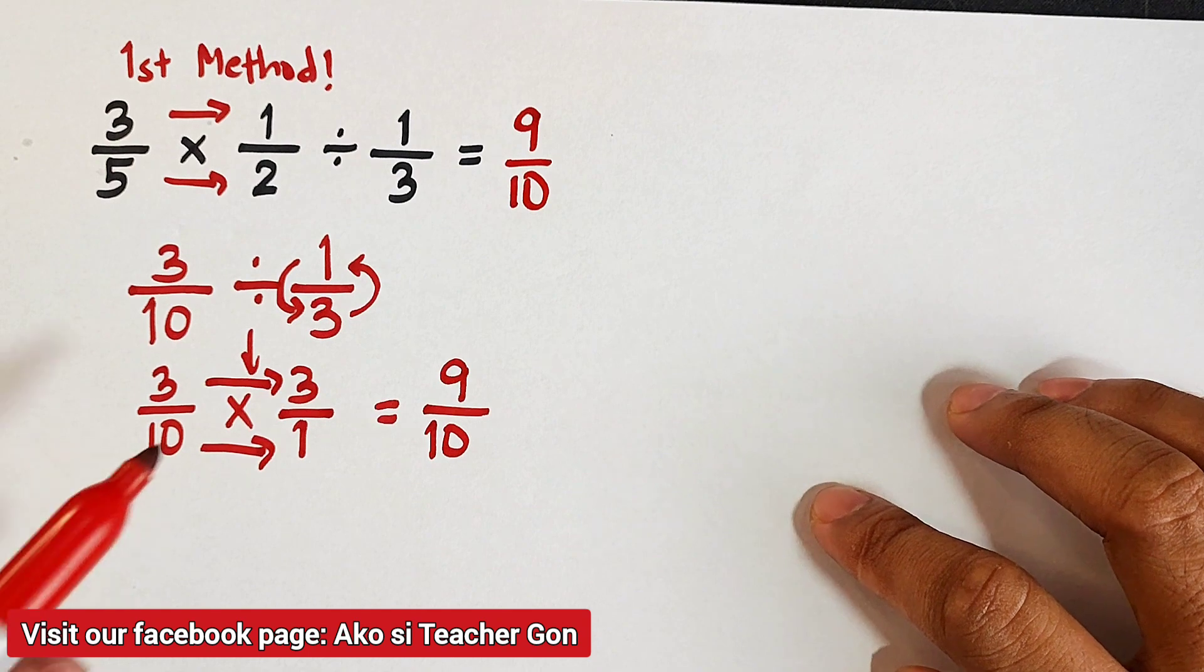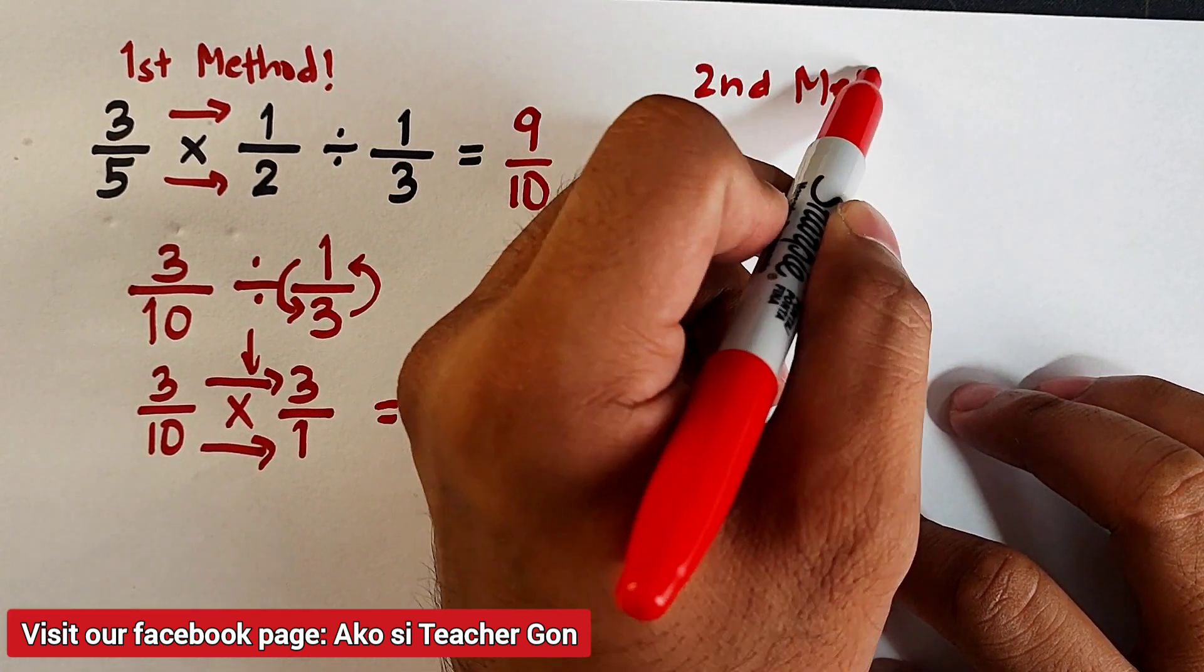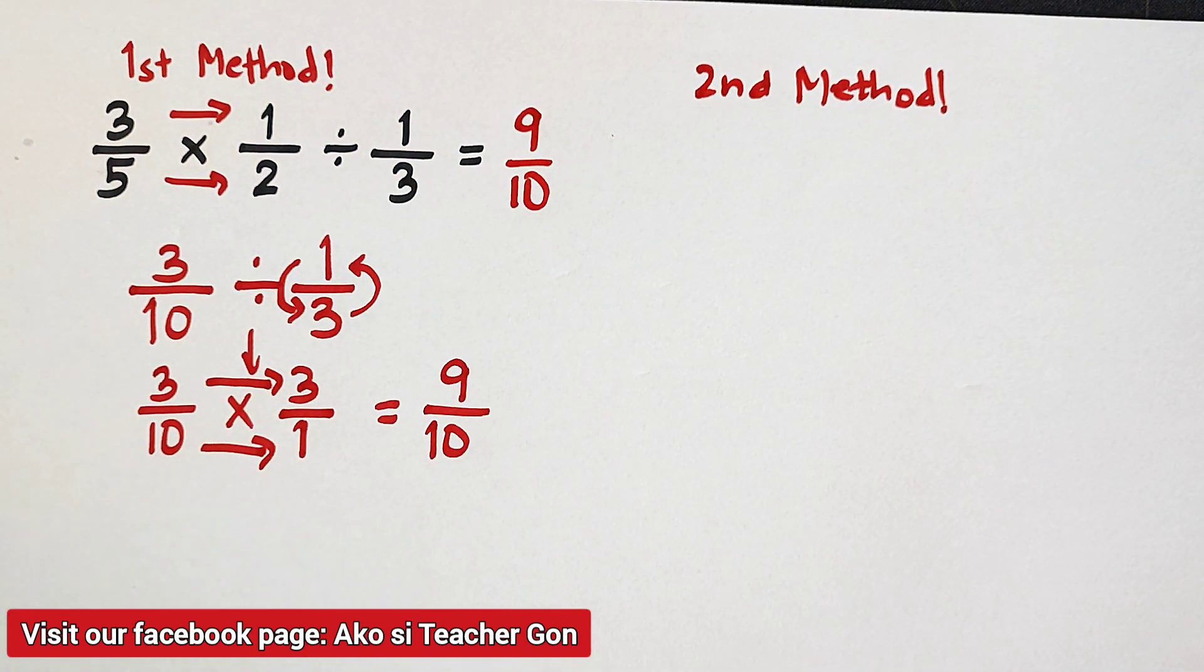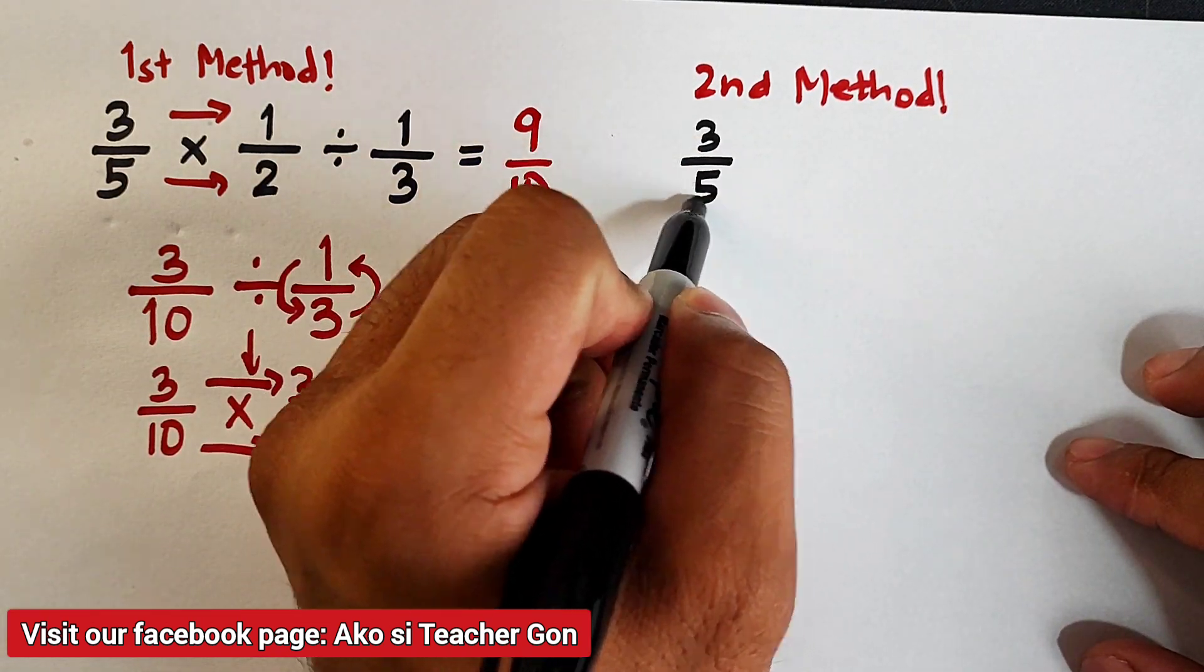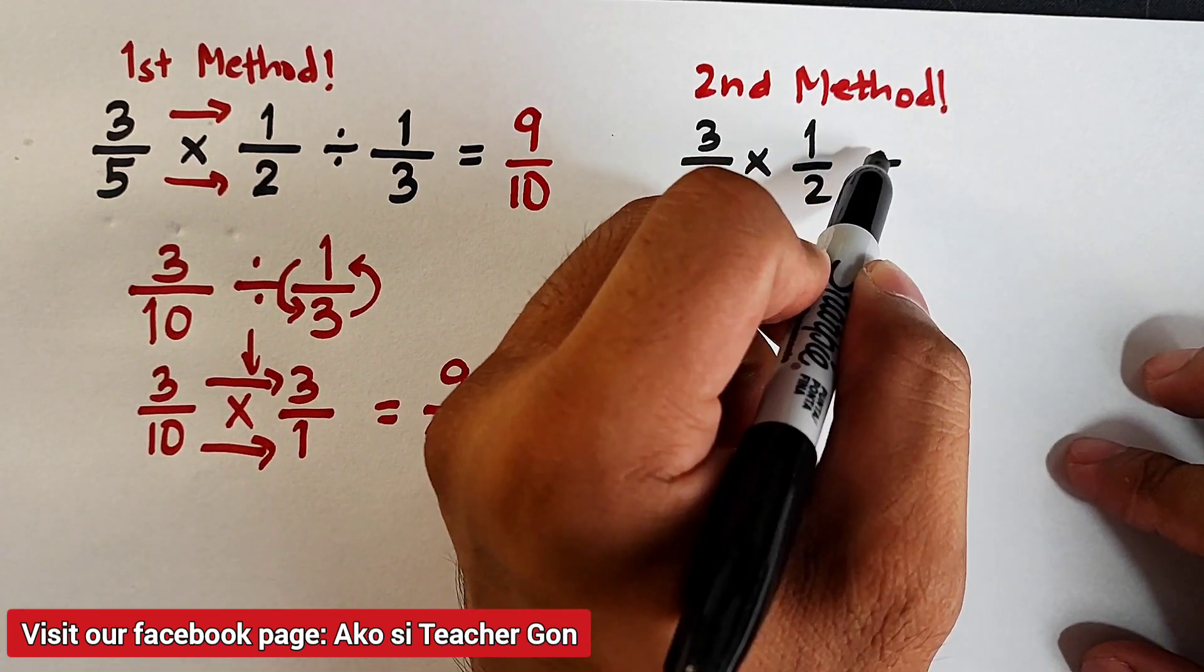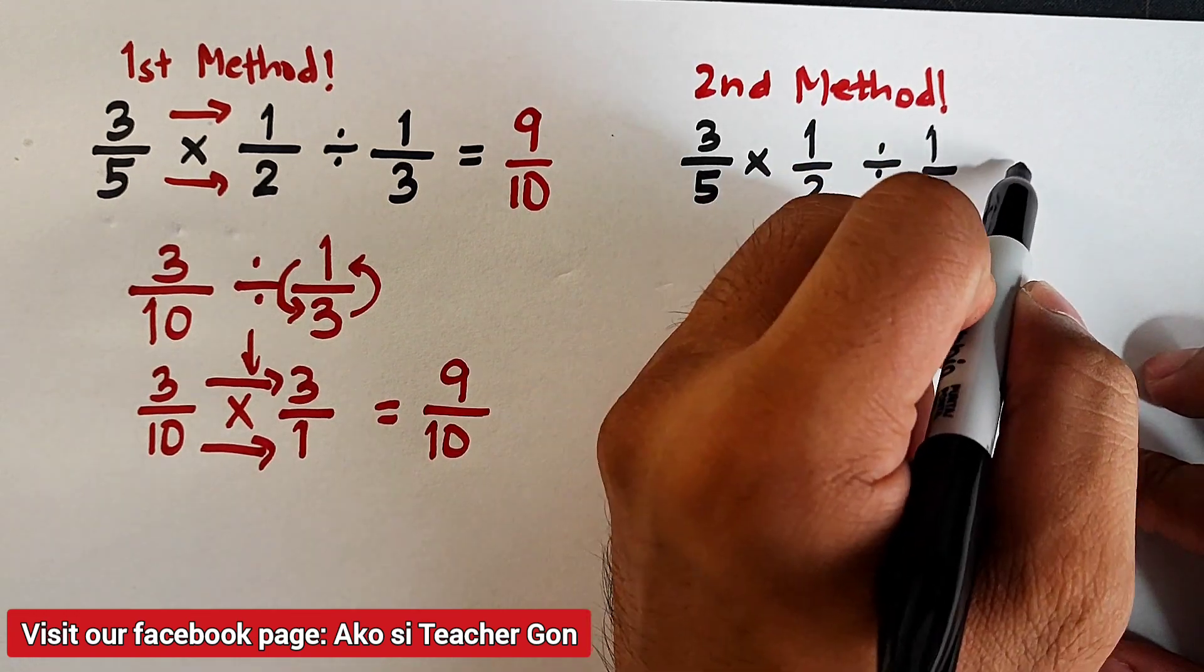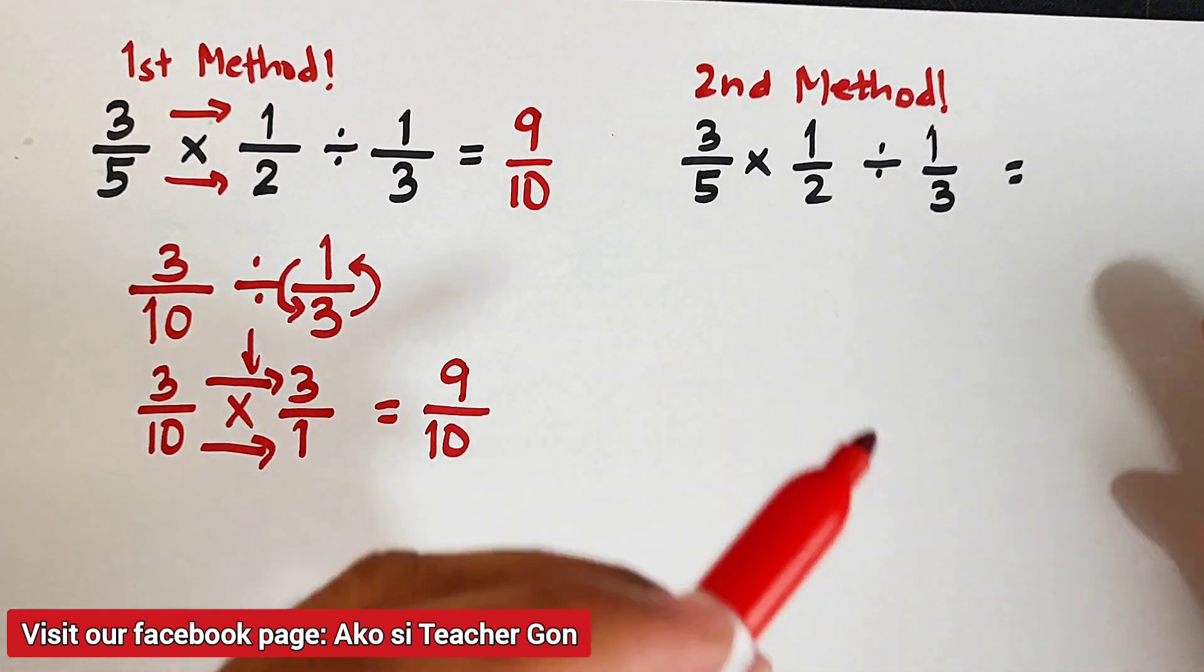Now let's have the second method. Let's try if we can still get the same answer. So let me copy first the given fraction. We have 3 over 5 times 1 over 2 divided by 1 over 3. So to simplify this in a shortcut method, all we need to do is to follow this pattern.